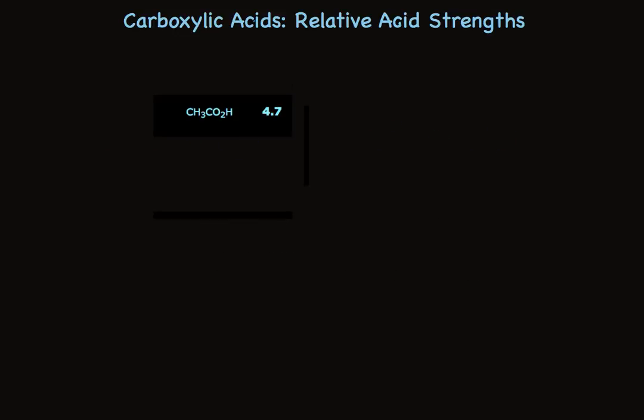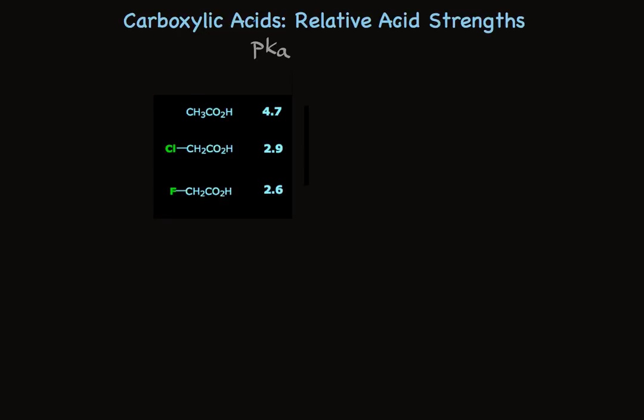Take a look. We'll compare everything to acetic acid, which has a pKa of 4.7. As we add substituents that are electron withdrawing, those substituents help accommodate the negative charge. They're pulling negative charge toward them, placing a partial positive charge near the negative charge.